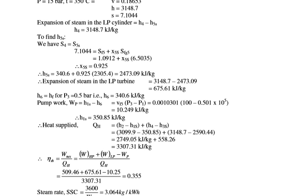From X5 = 0.925, calculate H5 = HF5 + X5 × HFG5 = 2473.09 kJ per kg. The expansion of steam in the LP turbine is H4 minus H5S = 3148.7 minus 2473.09 = 675.61 kJ per kg.